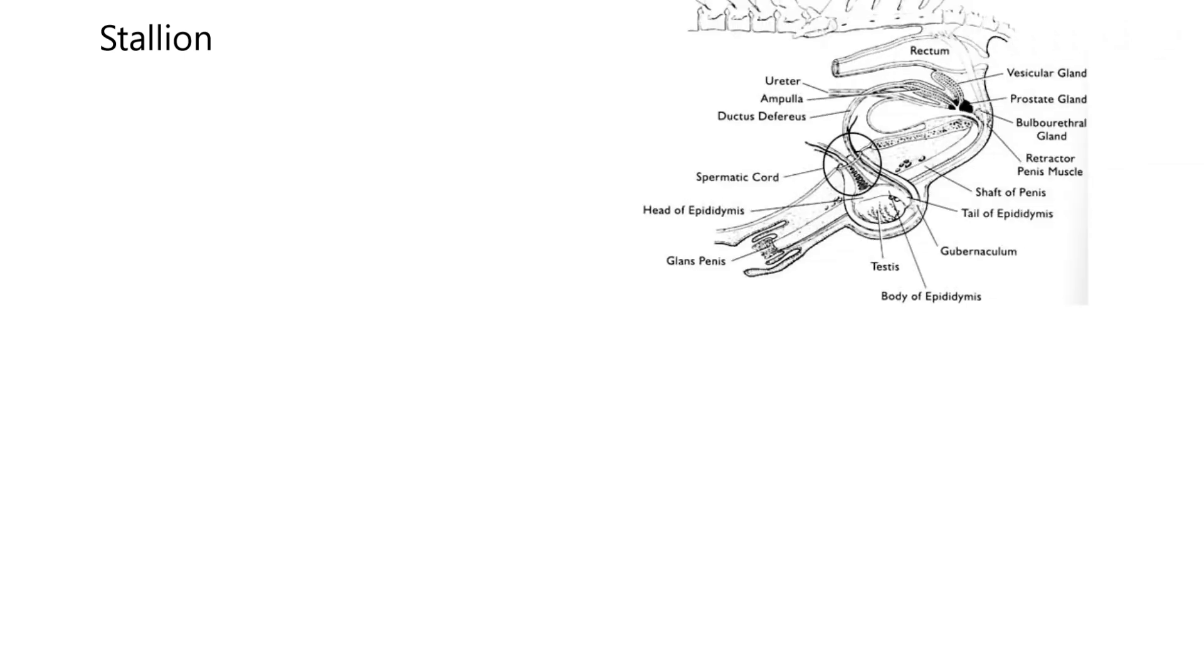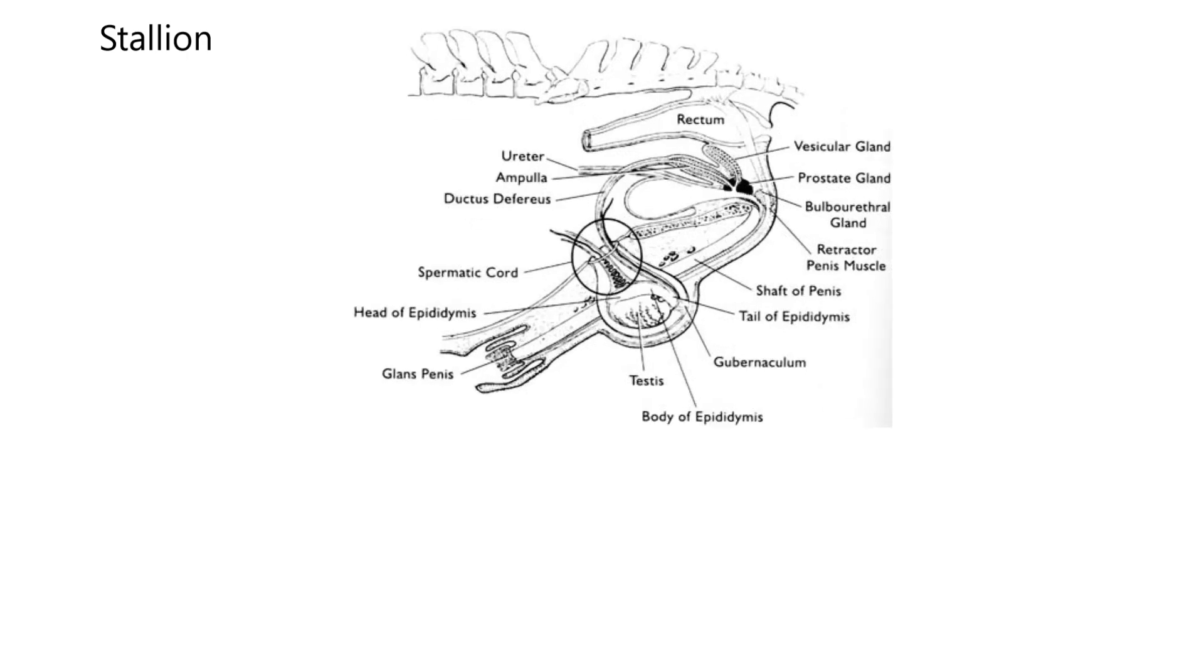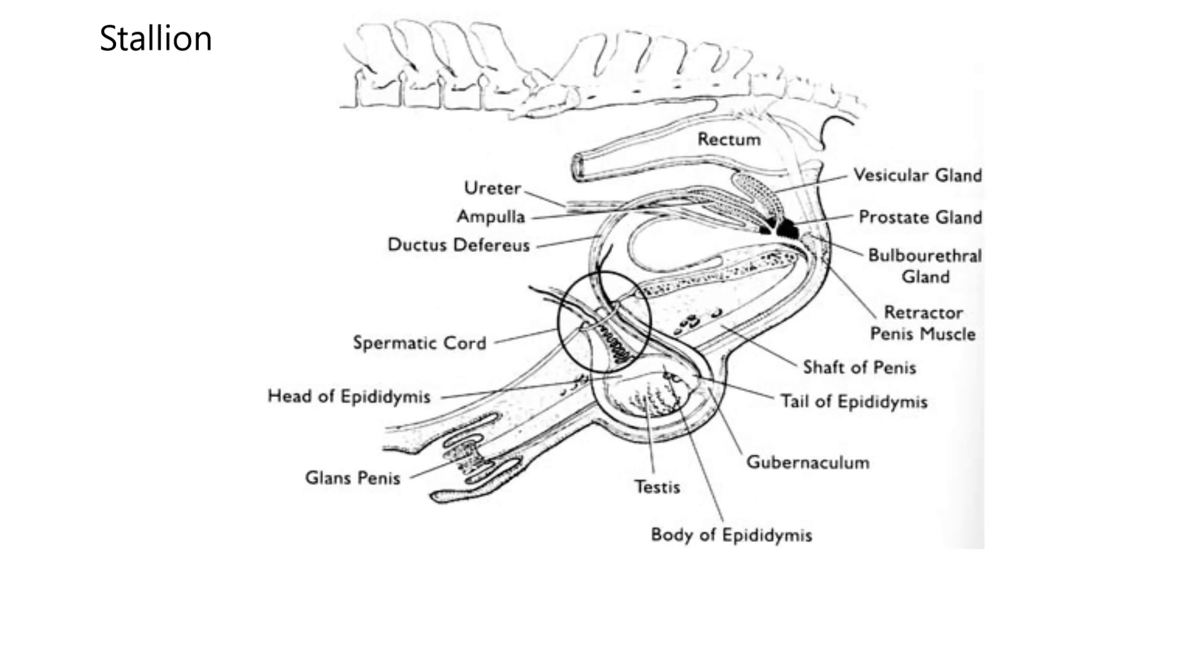Now the male horse is called the stallion. Let's look at somebody's drawing. They're getting a little complicated. That's why at first, if you've never known the plumbing of this stuff, then my concept drawing, I'm going to brag about it. You can orientate yourself: cranial, caudal, dorsal, ventral.